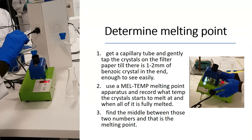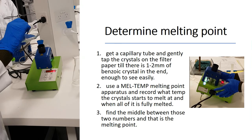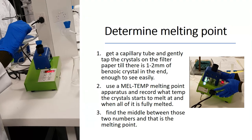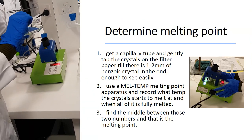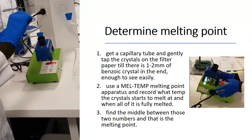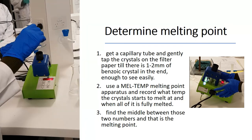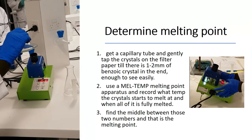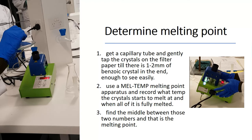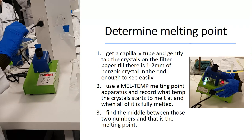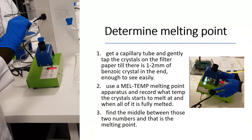Get a capillary tube and gently tap the crystals on the filter paper until there is a 1–2 millimetre benzoic acid crystal in the end of the tube. Use a melting point apparatus and record the temperature at which the crystal starts to melt and when it is fully melted. Find the midpoint between these two temperatures — that is the melting point.